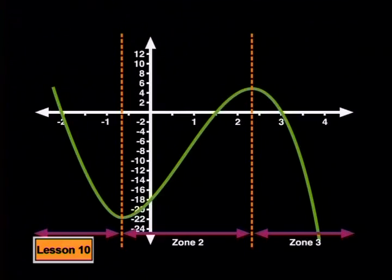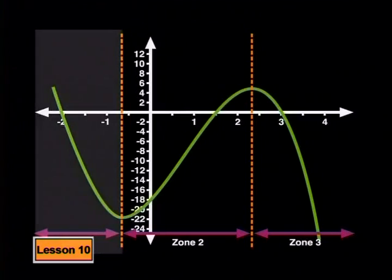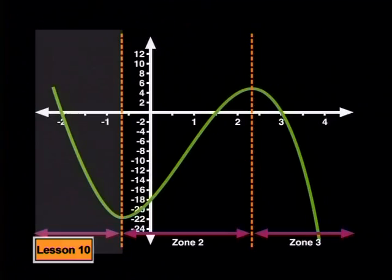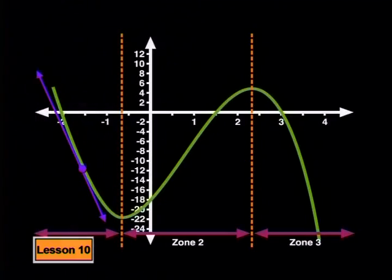Whether or not functions increase or decrease is an important property of functions to consider. Now I would like to link this property to our work on derivatives. Have a look at this graph. Please draw a tangent to the graph anywhere in the region where we decided that the function value was decreasing as the value of x increased.